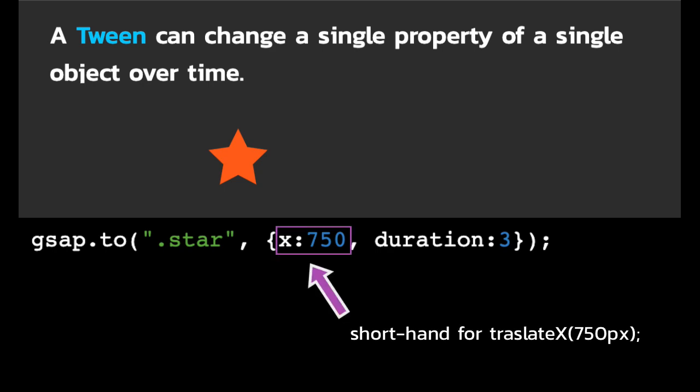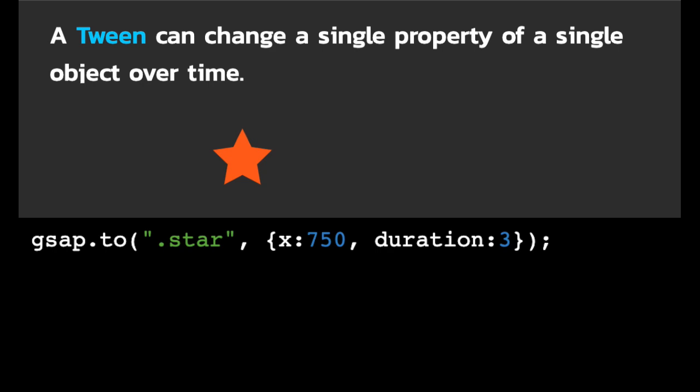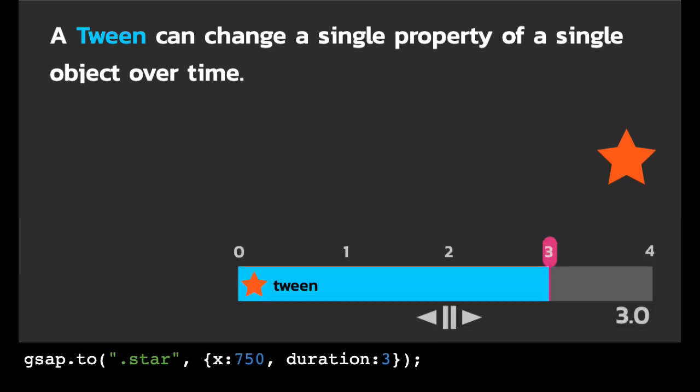The x property here is GSAP's shorthand for the CSS Translate X. To see how this works, I'm just going to press a little magic button here. There we go, our star moves. Now, to explain a little bit more about the power of tweens, let me move this code out of the way. What I have here is a little visualization that I'm hoping will help you understand some key concepts about GSAP.